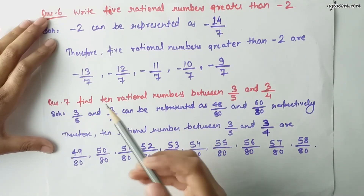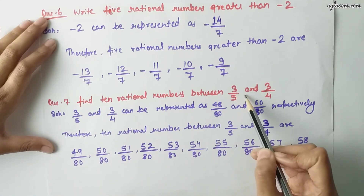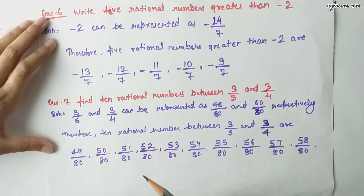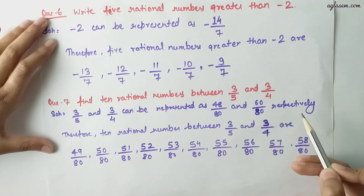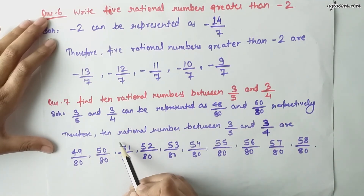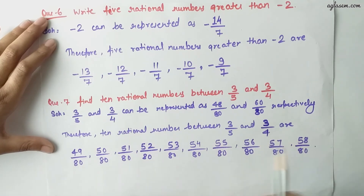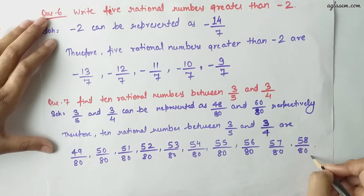Moving to the seventh question: find 10 rational numbers between 3 by 5 and 3 by 4. These can be represented as 48 by 80 and 60 by 80 respectively. Therefore, 10 rational numbers between 3 by 5 and 3 by 4 are 49 by 80, 50 by 80, up to 58 by 80.